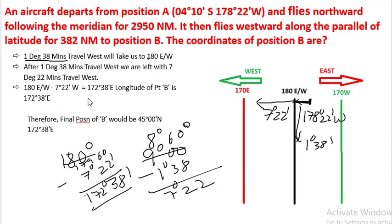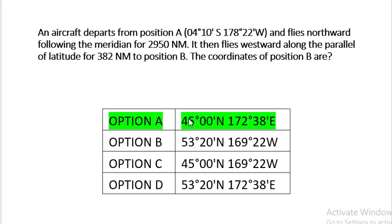So our longitude of point B is 172 degrees 38 minutes. Therefore, the final position of B would be 45 degrees north and 172 degrees 38 minutes east. The correct answer is option A, which is 45 degrees north, 172 degrees 38 minutes east.